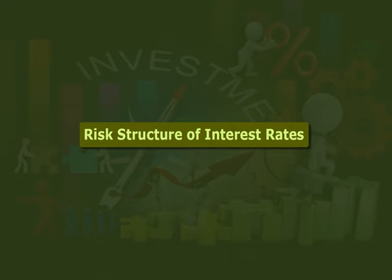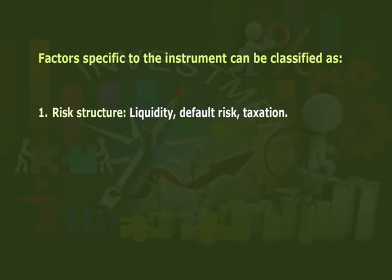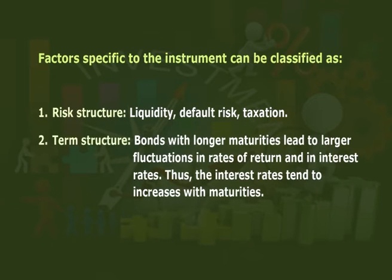Now we will study the risk structure of interest rates. The relationship between the interest rates on bonds with the same term to maturity is called the risk structure of interest rates. The interest rate of a certain financial instrument may reflect aggregate economic conditions such as general economic perspective, inflation expectations, and systematic risk. Factors specific to the instrument can be classified as: number one, risk structure — liquidity, default risk, and taxation; and number two, term structure — bonds with longer maturities lead to larger fluctuations in rate of return. We generally calculate risk structure by calculating the risk premiums.